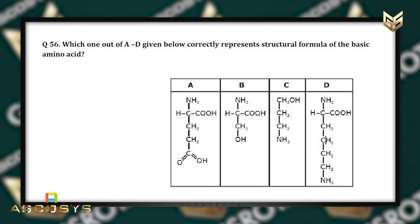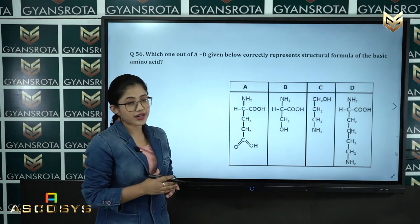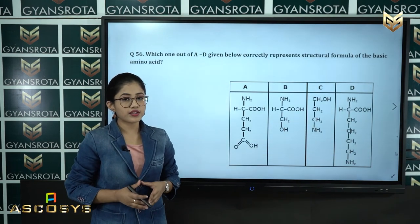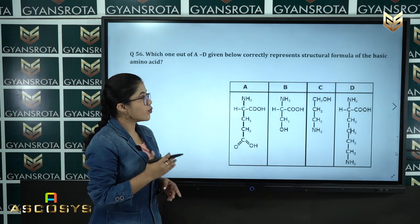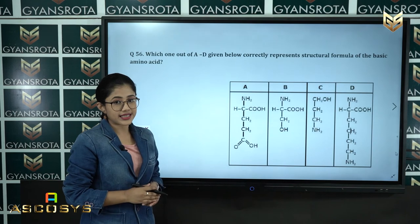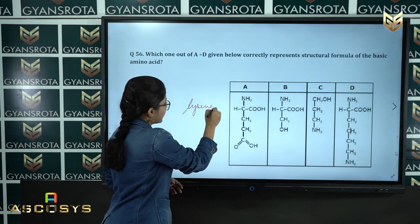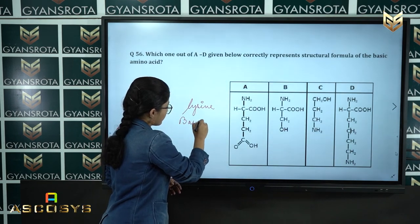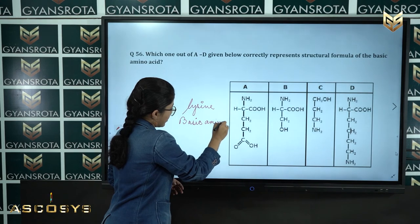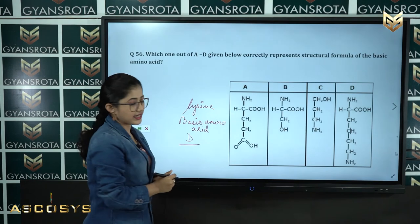Question 56: Which one of the given structures correctly represents the structural formula of a basic amino acid? From the chapter Biomolecules, the correct answer is option D, which represents Lysine — a basic amino acid.